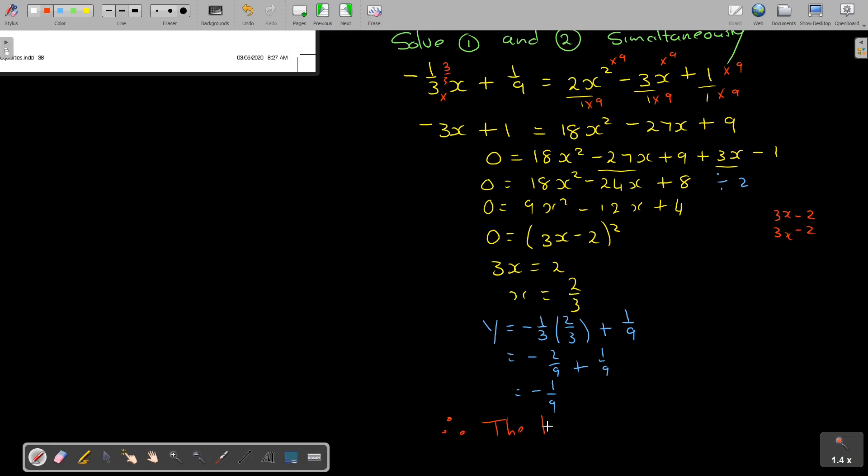And that will be equal to negative 1 over 9. So I'm ending off nicely by saying, make it red, therefore the line touches the curve at 2 over 3, minus 1 over 9. And that's how you do it.